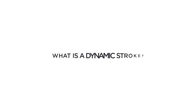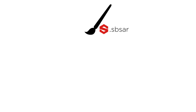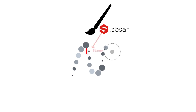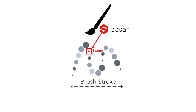So let's first define what a Dynamic Stroke is. A Dynamic Stroke is a Brush Stroke that is powered by a Substance File. The Substance File can dynamically control each stamp inside of a Brush Stroke, and individual elements of a Brush Stroke can be modified based on a behavior designed in the Substance File itself.